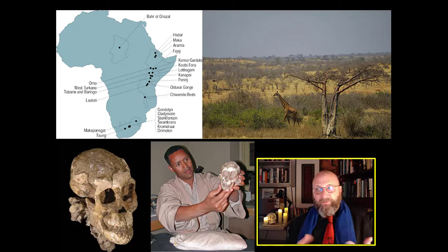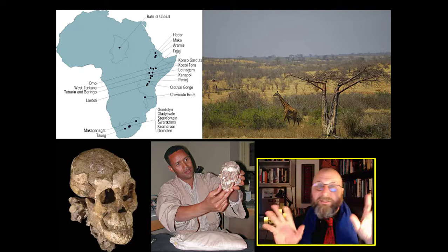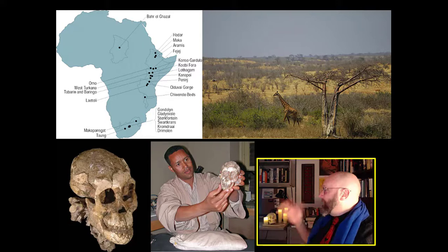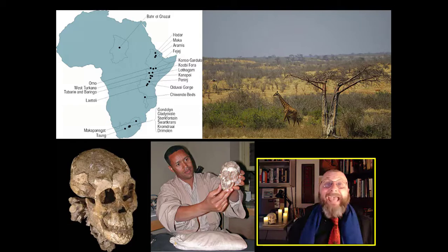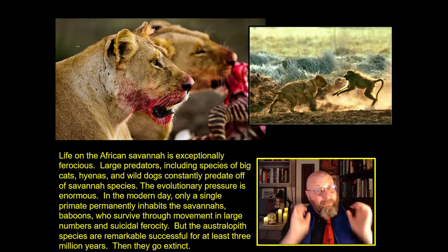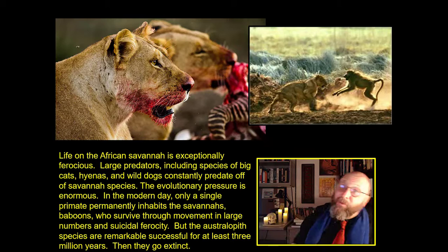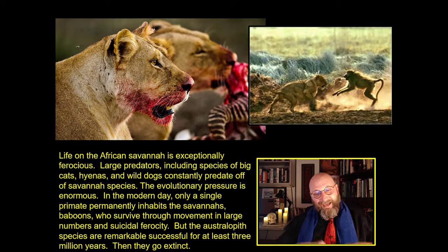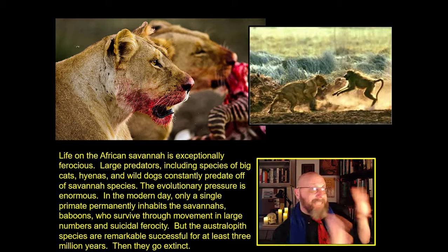It's called australopithecus afarensis because it's from the Afar region of Ethiopia. They're not very big things — only about four feet tall. Life on the African savanna is exceptionally ferocious. You've got megafauna and megapredators — wild dogs, hyenas, lions. Large predators including species of big cats, hyenas, and wild dogs are constantly predating off each other. This is one of the reasons you don't see a lot of primate species on the open savannas of Africa.